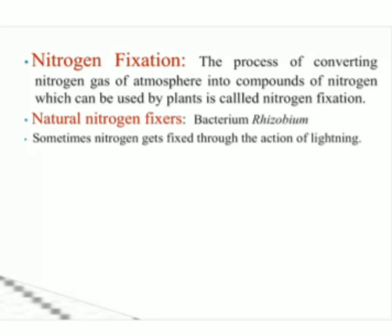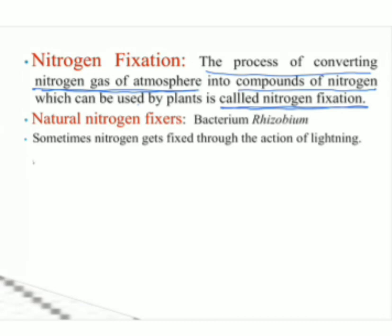What is nitrogen fixation? The process of converting nitrogen gas of the atmosphere into compounds of nitrogen which can be used by plants is called nitrogen fixation. We know that 78% of the atmosphere is nitrogen gas. This nitrogen should be converted into compounds which plants can take.